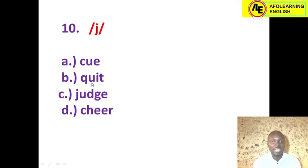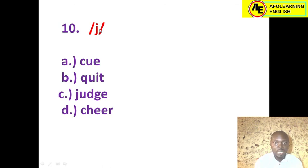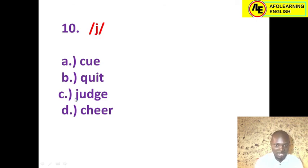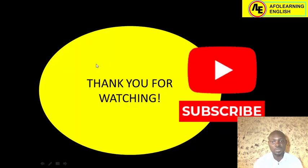Finally, number ten: the semi-vowel /j/. Students should not confuse this consonant sound with letter J — they are two different things. This sound is pronounced /j/ and can be found in the word 'queue' — yes, that is the correct answer. You can also find it in words like 'dew.' 'Quit' — no. 'Judge' — this has the affricate /dʒ/, which is different. 'Chair' — no. The correct answer is queue. We've come to the end of today's questions on phonetic symbols from 2017 to 2018.